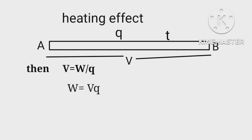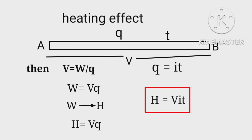That converts into heat energy H. Therefore H equals Vq, where q equals i t. Putting this value in, we get H equals V i t. This is the amount of heat produced by a current i.